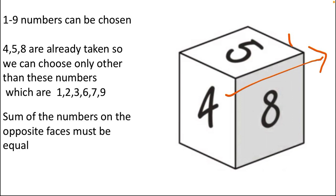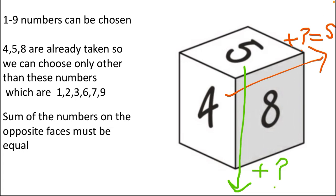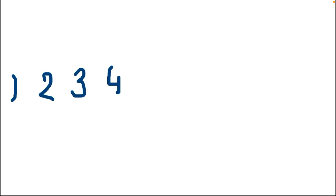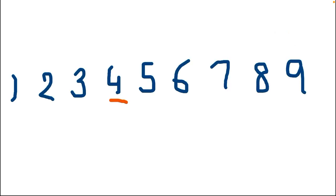Setting up equations: four plus its opposite number equals S. Five plus its opposite number equals S. Eight plus its opposite number equals S — where S stands for the same value. The arrows represent opposite sides of each other. So all three pairs, when each number is added to its opposite face number, must give the same result S.